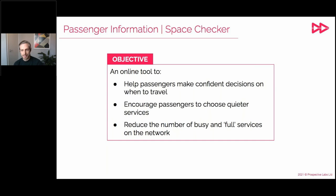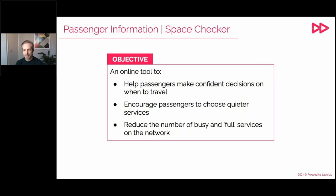There are three key ways we've been approaching this: resource allocation, passenger information, and managing the fleet in real time. Space Trekker looks at one of these — passenger information — and supports occupancy management by providing information to passengers on how busy buses are expected to be. Space Trekker tries to do three key things: it enables passengers to make more confident decisions on when to travel, it encourages passengers to choose quieter services, and in the process it reduces the number of busy or full services on the network, creating positive uplift in ridership both in the short and long term.